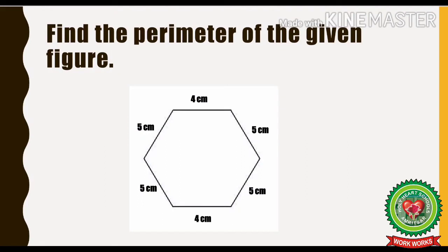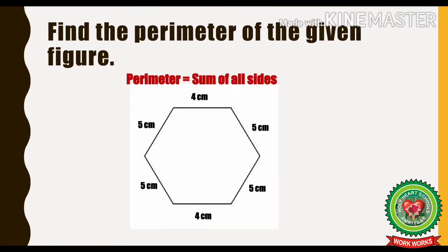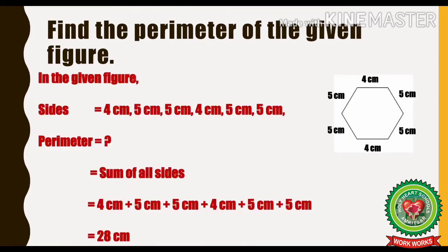Find the perimeter of the given figure. As you can see, this figure has 6 sides and the different sides have different measurements. To find out the perimeter, we will use the formula sum of all sides. In the given figure, sides are equal to 4 cm, 5 cm, 5 cm, 4 cm, 5 cm, and 5 cm.